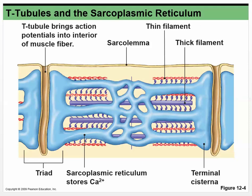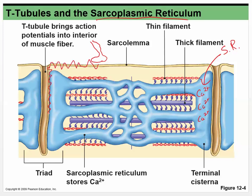Let's go into a little more detail. The sarcoplasmic reticulum is this structure that has lots and lots of calcium in it — calcium is an ion with a plus-two charge. Here are our T-tubules. A depolarization happens out here, and then an action potential moves down into these T-tubules, causing calcium to be released.